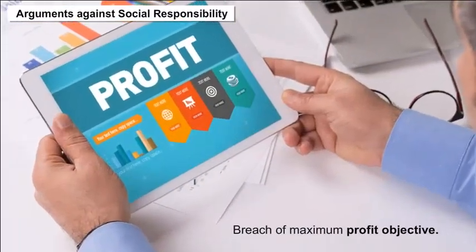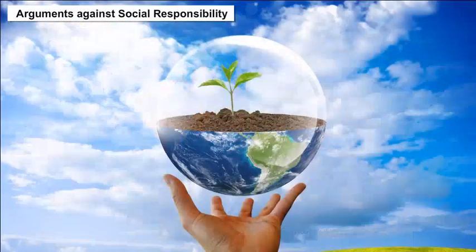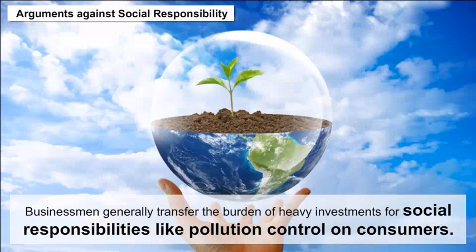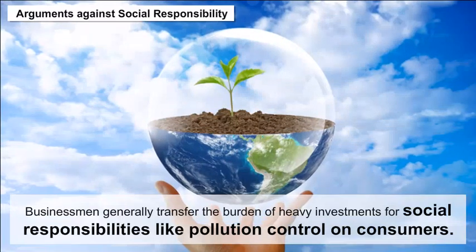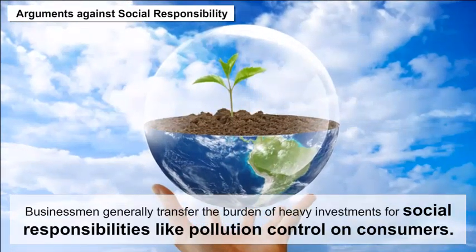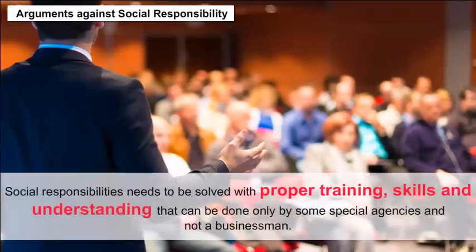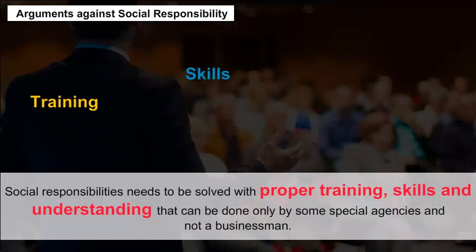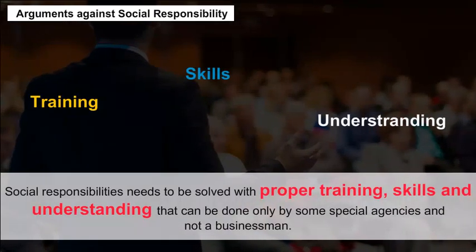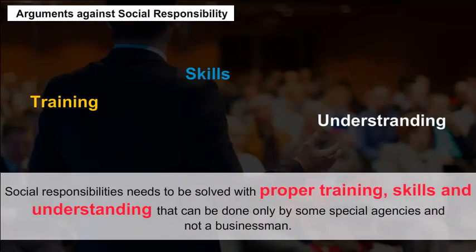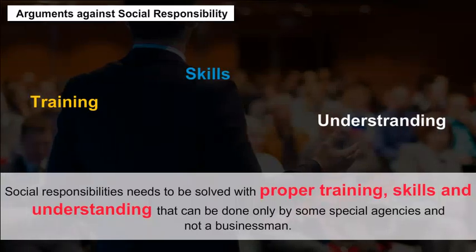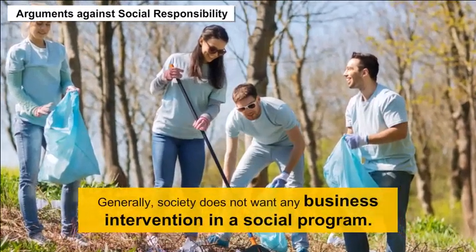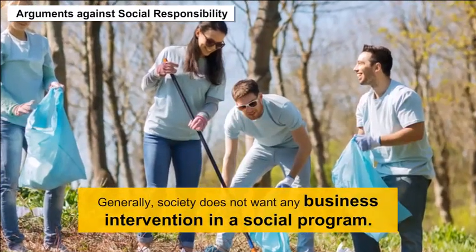Arguments against Social Responsibility: 1. Breach of maximum profit objective. 2. Businessmen generally transfer the burden of heavy investments for social responsibilities, like pollution control, on to consumers. 3. Social responsibilities need to be solved with proper training, skill and understanding, which can be done only by some special agencies and not a businessman. 4. Generally, society does not want any business intervention in a social program.